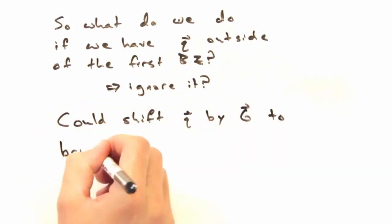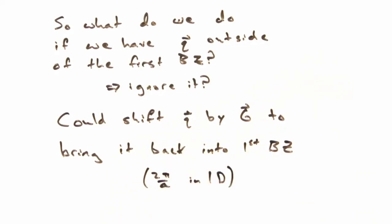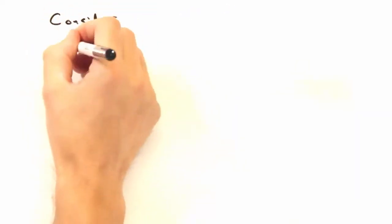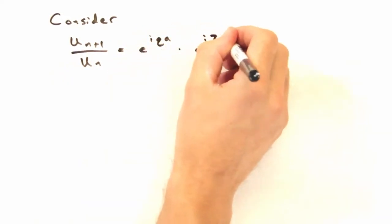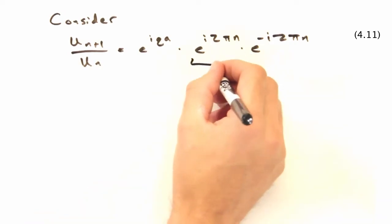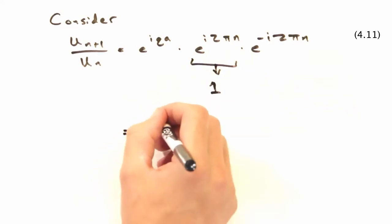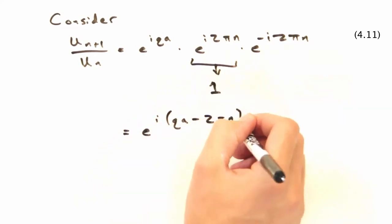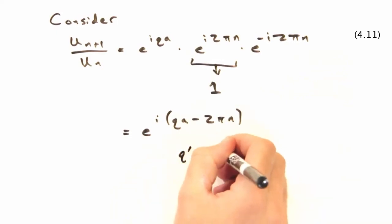Well we could, but instead we could shift q by our reciprocal vectors until it was in the right range. To see this, let's go back to our original displacement ratio and multiply by e to the i 2 pi n and e to the minus i 2 pi n. E to the i 2 pi n would just be 1 since n is an integer, so we can scratch that. But now we have this other exponential.